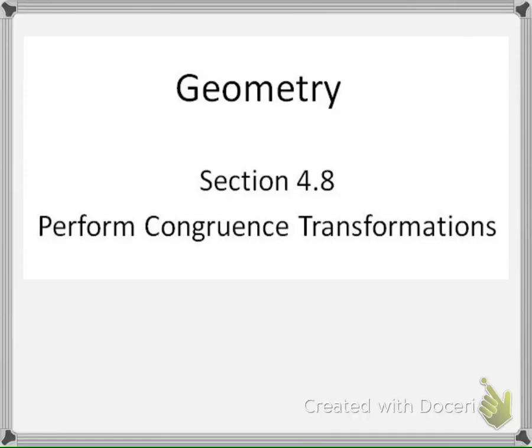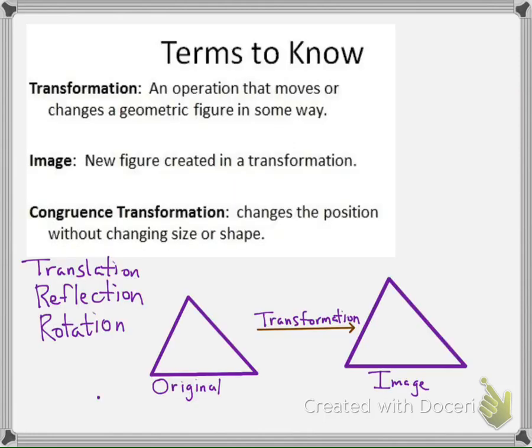Section 4.8 — we look at congruence transformations. To finish up our chapter on congruence, we're going to look at ways we could change or move a figure and still maintain congruence. That's what a transformation lets us do — it's an operation that moves or changes a geometric figure in some way. That new figure that we get, we're going to call the image. We're talking about congruence transformations because they give us a new shape, but it doesn't change its size or shape.